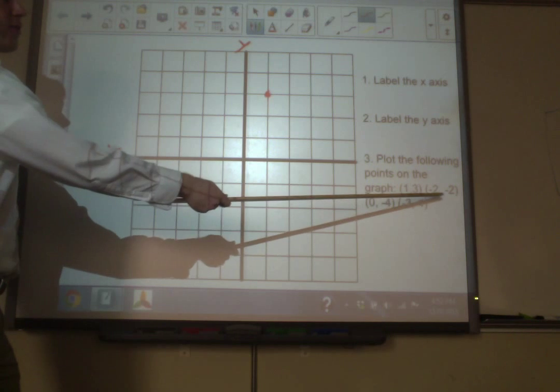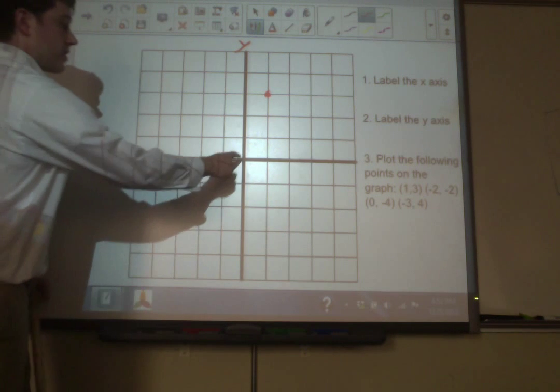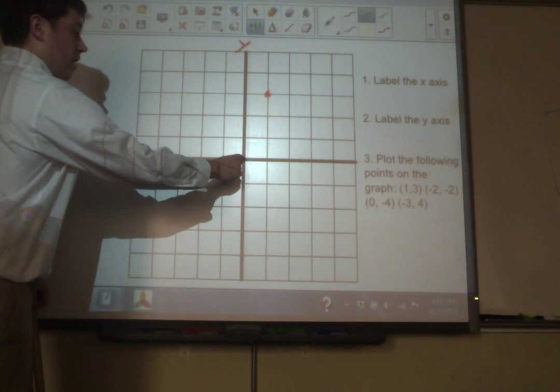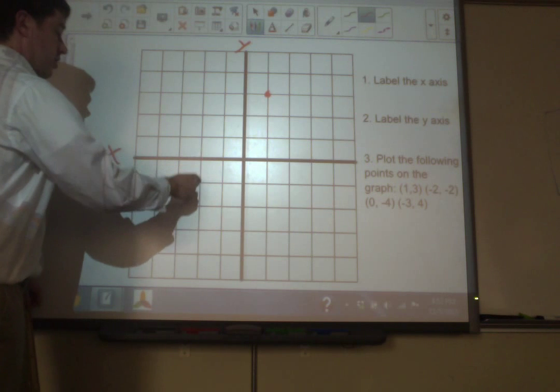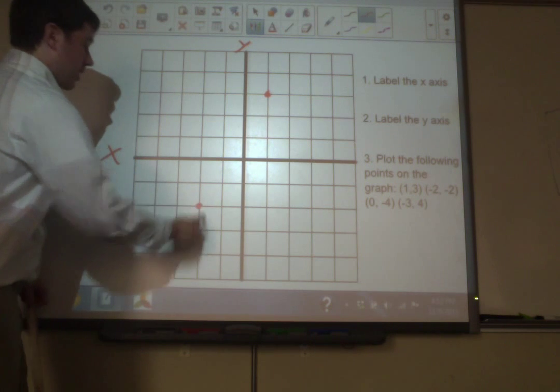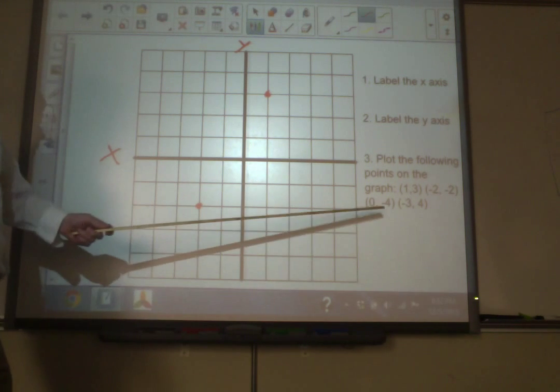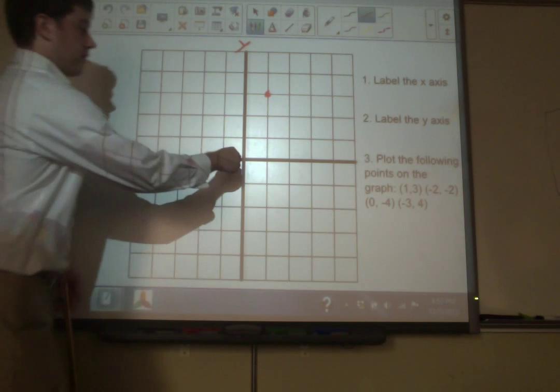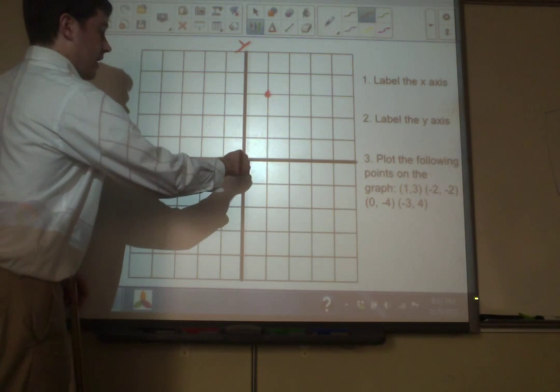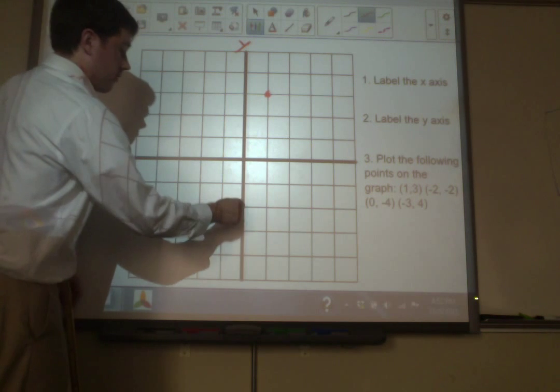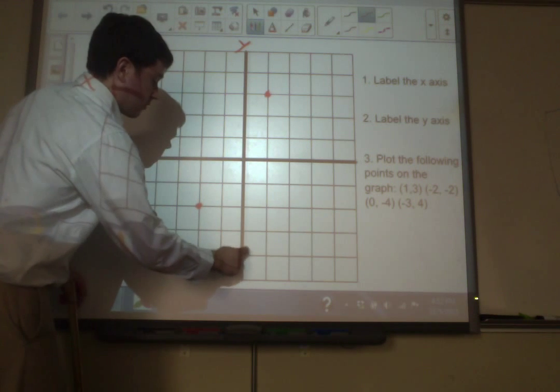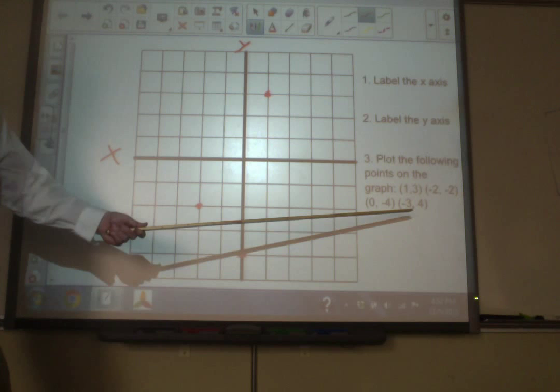If I were to plot (2,4), again, I start right here in the middle at the origin. I move in the x direction, and in the y direction. If I was going to plot (3,-4), I would start here, move 0 in the x direction, and move in the y direction.